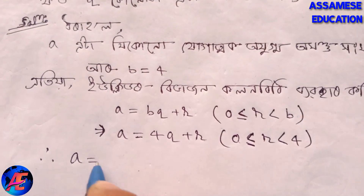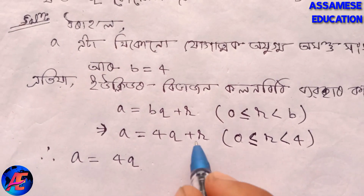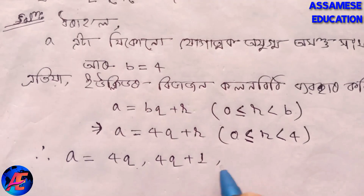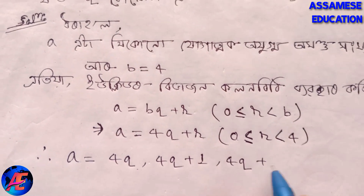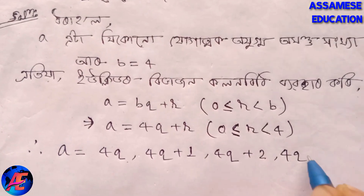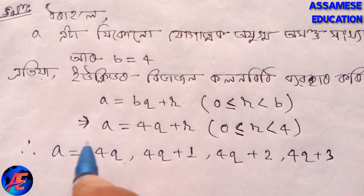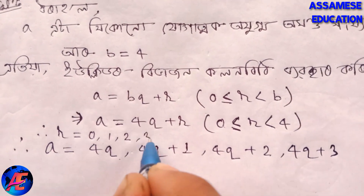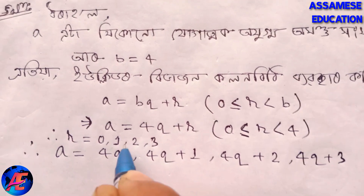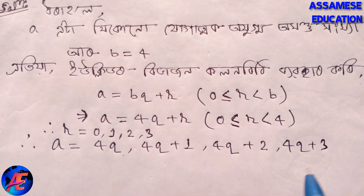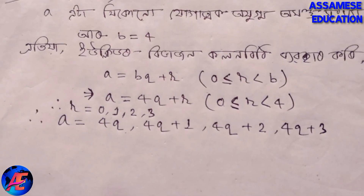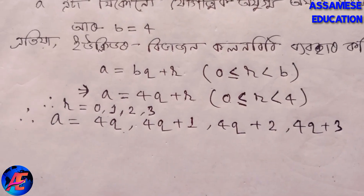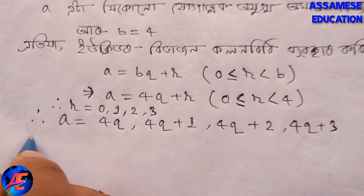So a is equal to 4q. It could also be 4q plus 1, 4q plus 2, or 4q plus 3. Here r is equal to 0, 1, 2, or 3. So any integer a can be written as 4q, 4q plus 1, 4q plus 2, or 4q plus 3.